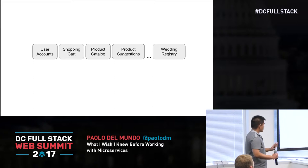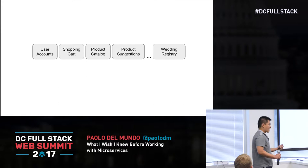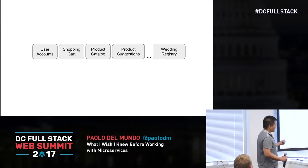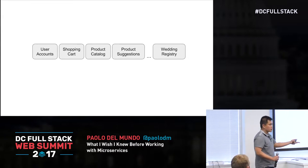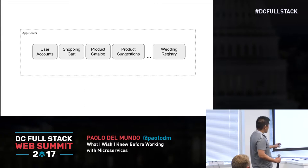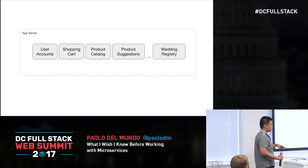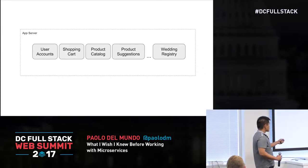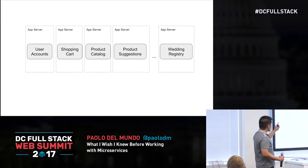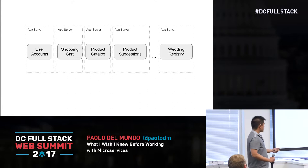So let's sync up first and talk about what a monolith is. Imagine that we're building an Amazon Lite app. The features for Amazon include user accounts, shopping cart, product catalog, and so on — eventually a wedding registry. With a monolith, you bundle all of these features onto the same app server. With microservices, you cut these features apart and place them onto different app servers.